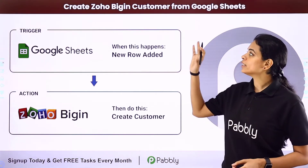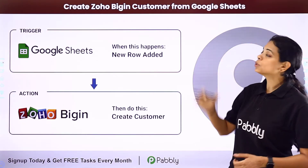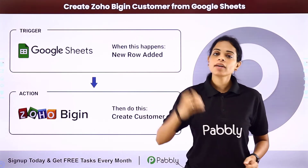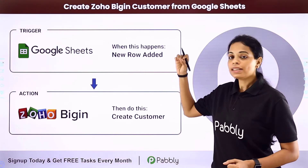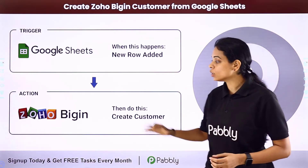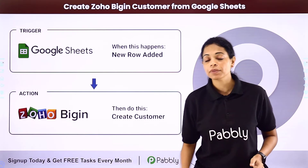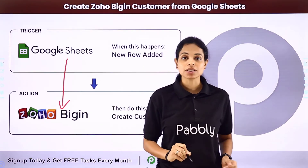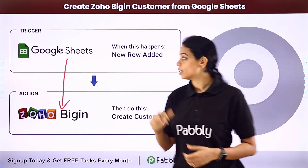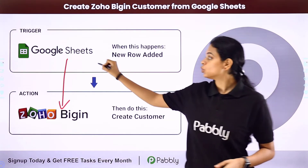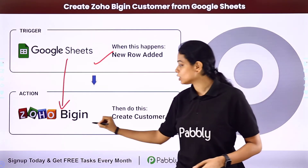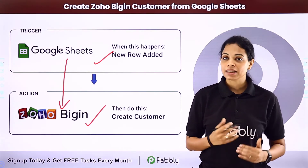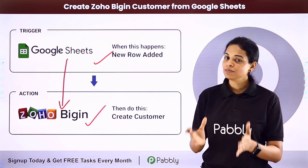In this video, we are going to see how to create Zoho Bigin customers from Google Sheets. Let's say that you have some data on your Google Sheets with the data of your clients. With this data, you want to create contacts on Zoho Bigin, which is your CRM. For this, you will need an integration between these two applications, which can be done using Pably Connect. Your trigger application would be Google Sheets and your action application would be Zoho Bigin. Let me take you to my screen.